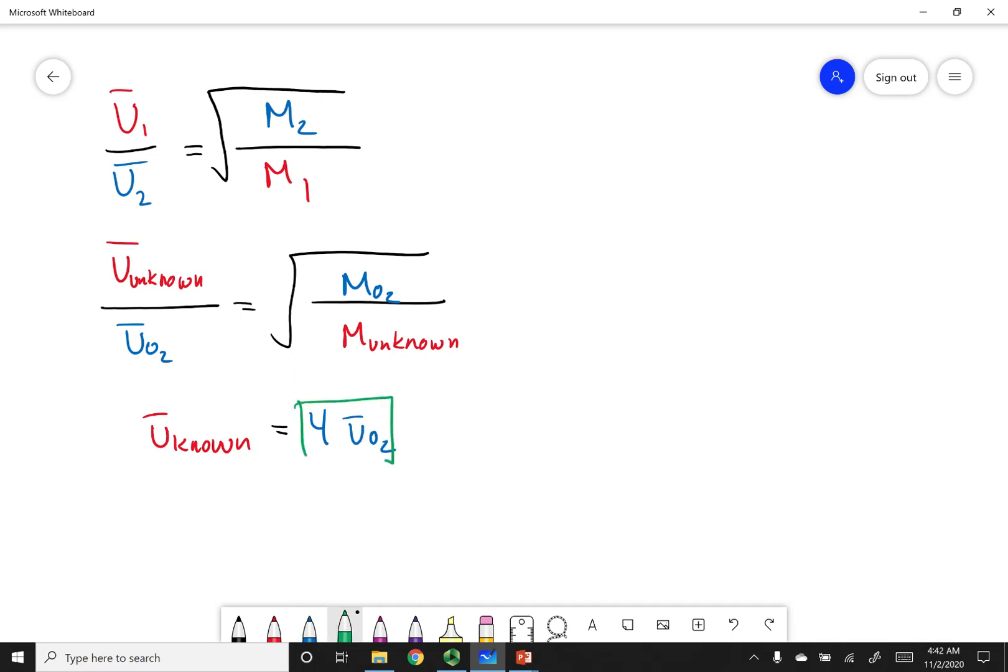So what I can do is I can make a substitution. I can put four times the velocity of oxygen up on top, the velocity of oxygen on bottom, and I'll be sure to write my molar masses correctly, where I had the molar mass of oxygen on top and the molar mass of my unknown gas on the bottom. The velocity of oxygen cancels out, and I can go ahead and square both sides.